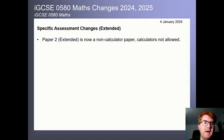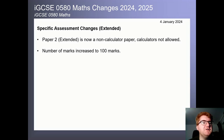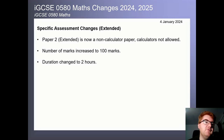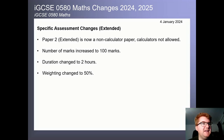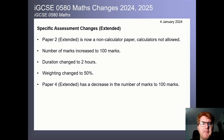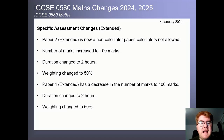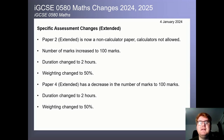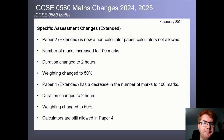Extended has changed in a very similar way. Paper 2 is now a non-calculator paper, increased to 100 marks, and is now a two-hour paper rather than one hour 30 minutes, with a 50% weighting. Paper 4 extended has also been set to 100 marks, two hours, at 50% weighting. Calculators are still allowed in Paper 4. Making the papers equally weighted is a really positive change by Cambridge, and it also properly tests non-calculator skills.